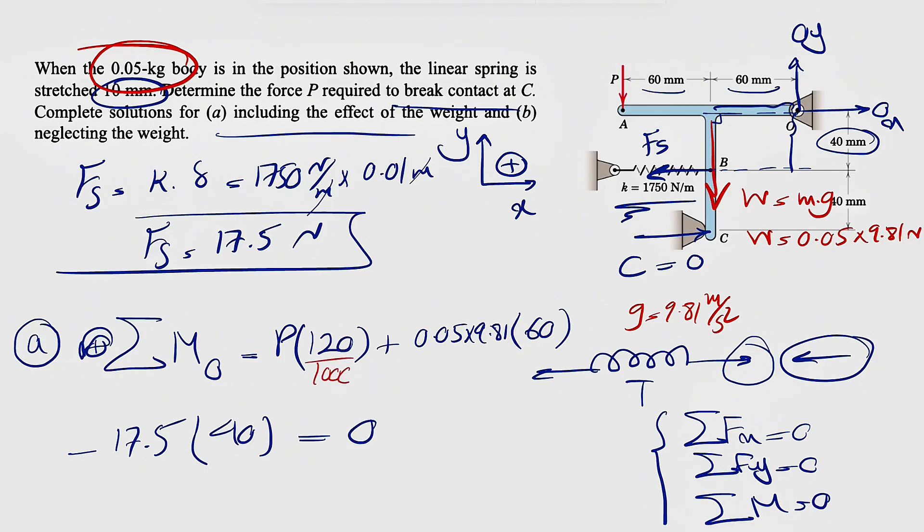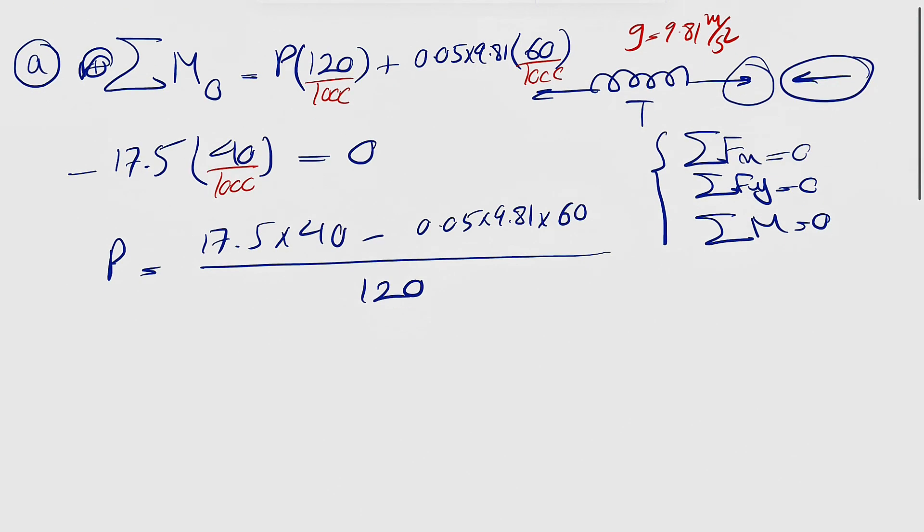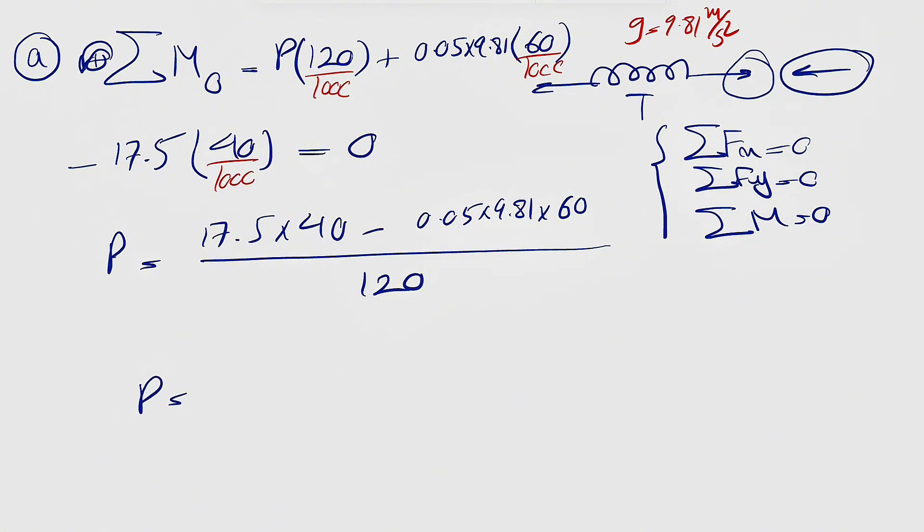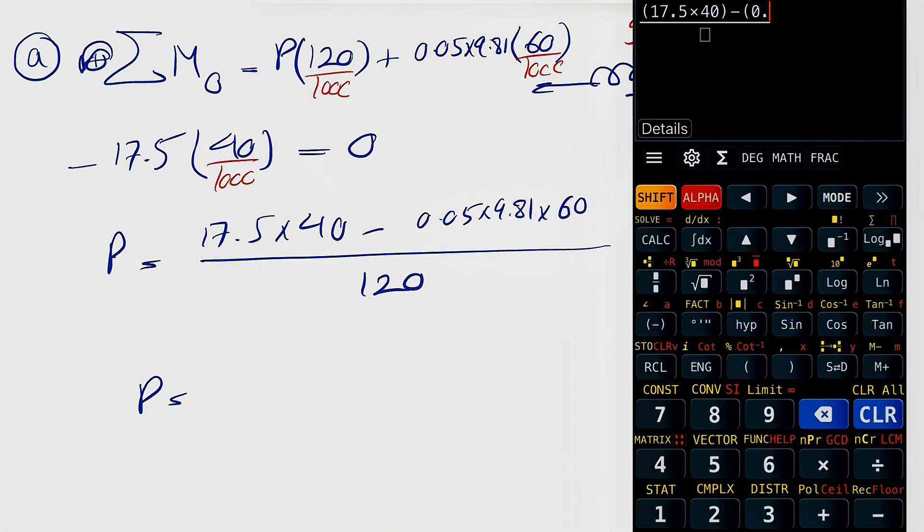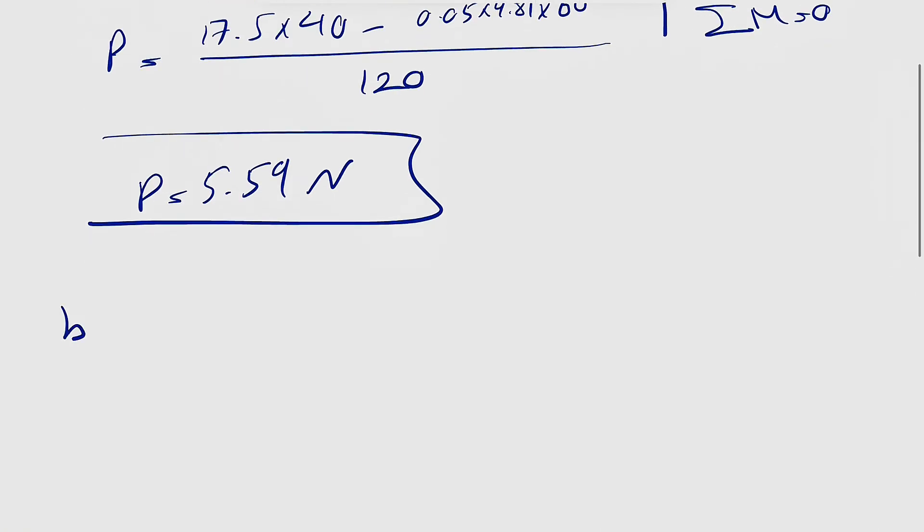For unit conversion with millimeters, we could divide each by 1000, but multiplying the equation by 1000 gives us the same result. So force P equals (17.5 × 40 - 0.05 × 9.81 × 60) / 120. Calculating this gives us 5.59 Newtons for part A.